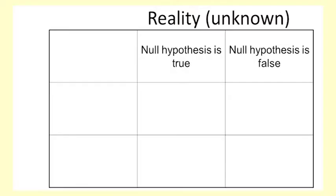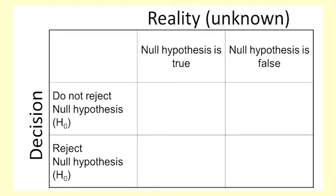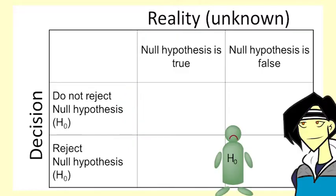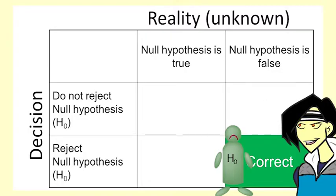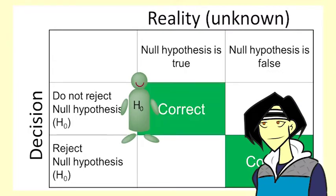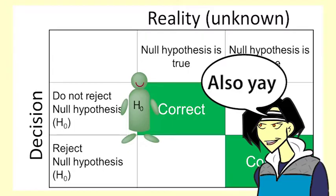In reality, either the null hypothesis is true or it is false. When we perform a hypothesis test, we make a decision either to reject the null hypothesis or not to reject the null hypothesis. If we reject the null hypothesis when it is false, that is a correct action. If we do not reject the null hypothesis when it is true, that is also a correct action.